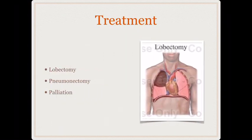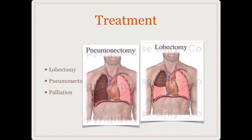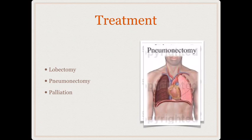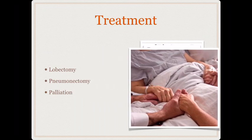Treatment depends on the size, location, and stage of the tumor. For stage 1 and 2 tumors we can offer surgery — if the tumor is confined to one lobe, we can do a lobectomy; if more than one lobe is involved, we can offer a pneumonectomy. However, most patients present at very late stages because most cases are asymptomatic and investigations are not ordered early enough, so the only treatment we can offer is palliation.